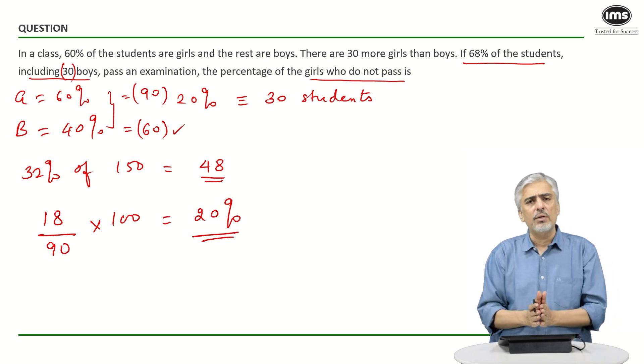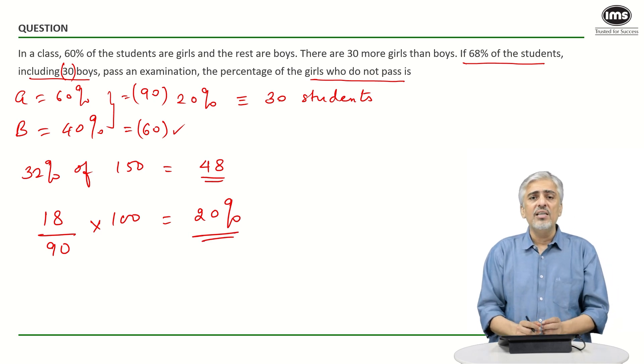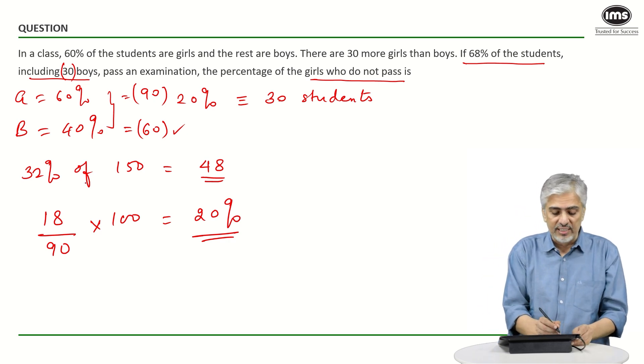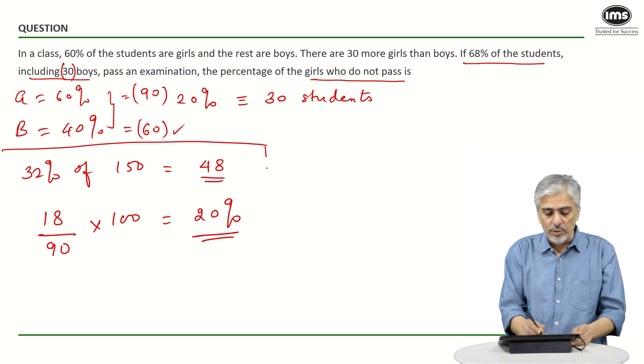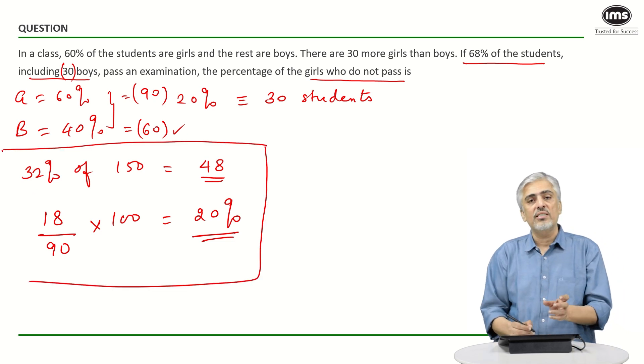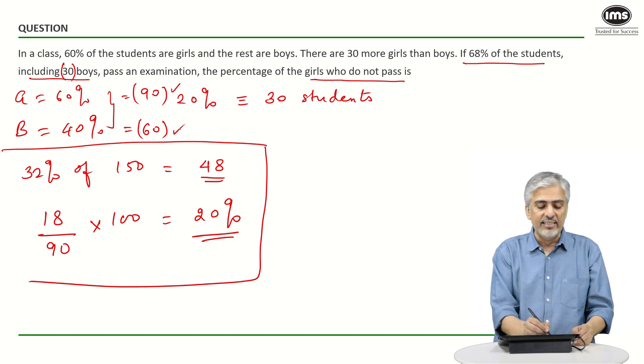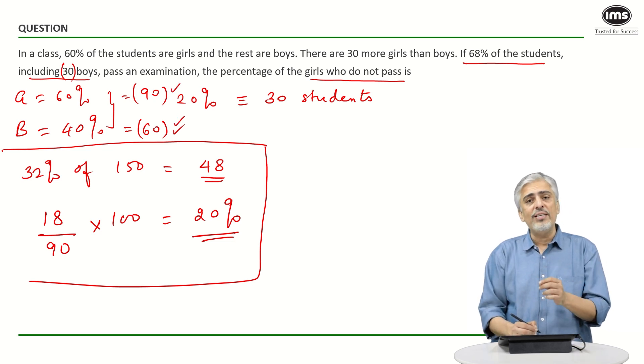A very straightforward approach, nothing difficult. But if somebody wants to understand, can we use allegation somewhere? Yes, you can use allegation after this step. You still need to calculate the number of students first—150 students total, with 90 girls and 60 boys.